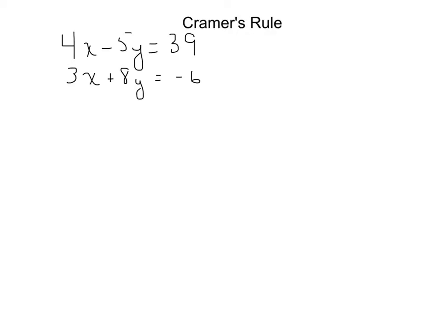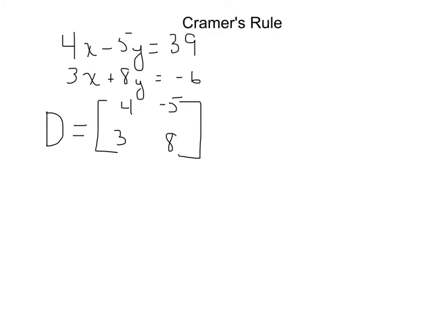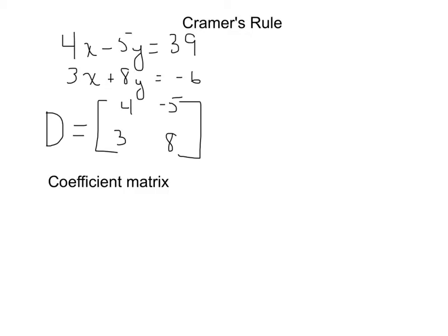The first thing we have to do is find the coefficient matrix. Different textbooks use a different variable or letter to denote this matrix, but most textbooks in pre-calculus or college algebra will use this notation. The coefficient matrix is exactly what it says — it's just those numbers that are in front of the variables. So this right here is our coefficient matrix.